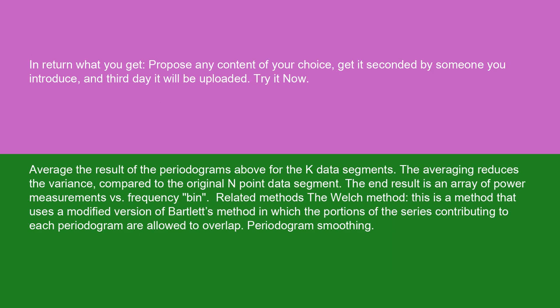Average the result of the periodograms above for the K data segments. The averaging reduces the variance compared to the original endpoint data segment. The end result is an array of power measurements versus frequency bin.